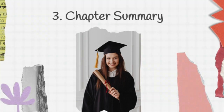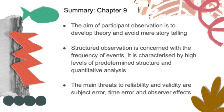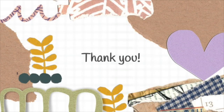Let's summarise this chapter. Participant observation is used in a wide range of social settings and means adopting a number of potential roles, differentiated according to the degree of concealed identity and participation in events adopted by the researcher. The aim of participant observation is to develop theory and avoid mere storytelling. Structured observation is concerned with the frequency of events and is characterised by high levels of predetermined structure and quantitative analysis. The main threats to reliability and validity are subject error, time error, and observer effects. That is all for today's topic. Dr. J here signing off — take care, bye-bye.